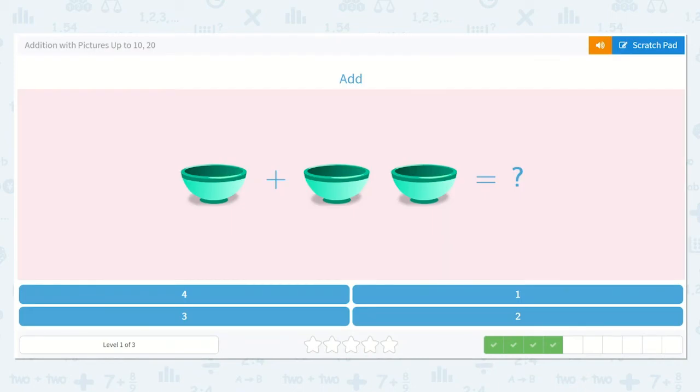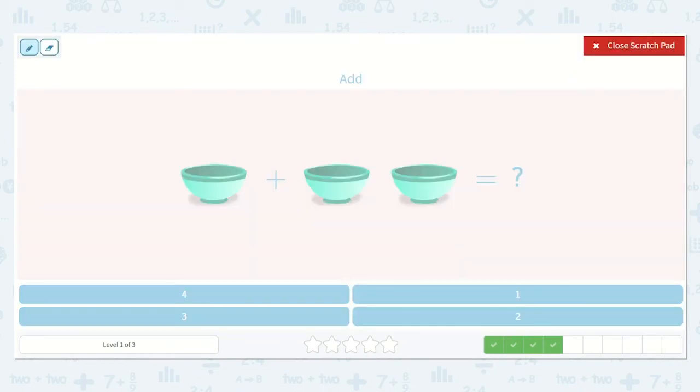All right. Now let's count the bowls. Let's add them. I know there is 1 in this group plus 1, 2 in this group. What is that equal to? Let's see. 1, 2, 3. 3. Do you see that option down below? Yes, right here.